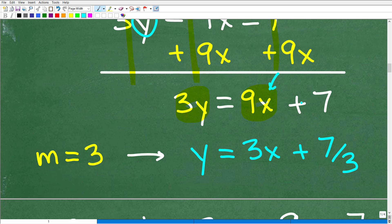So when I add down in a column manner, I get 3y plus nothing is 3y. Negative 9x plus 9x is 0, so that goes away. I don't need to write that 0 there, and this is going to be 7 plus 9x, but we'll write this as 9x plus 7 because, remember, it's going to be y equals mx plus b, so we want to have that variable term first. Okay, so we're almost there.